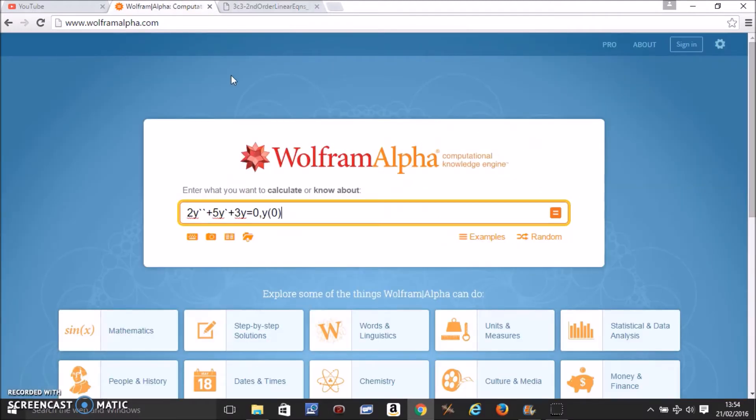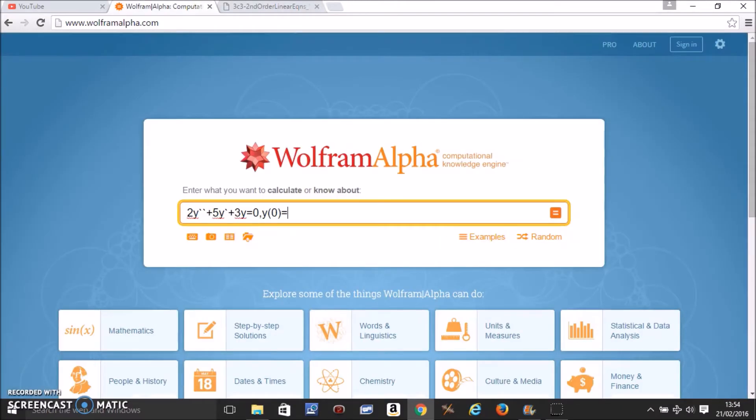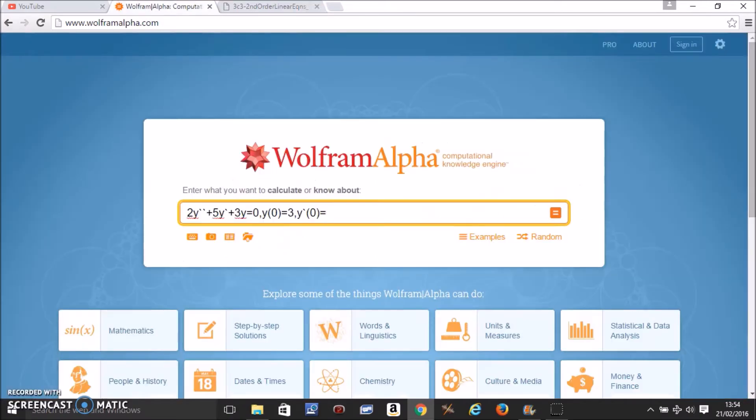y bracket 0 equals 3 comma y prime bracket 0 equals minus 4. So this is exactly the way you put in.